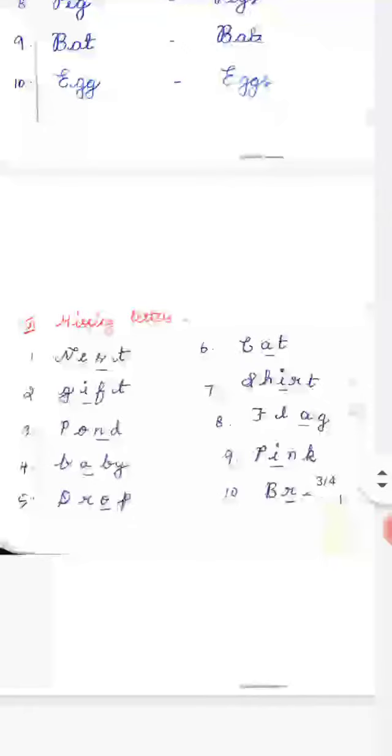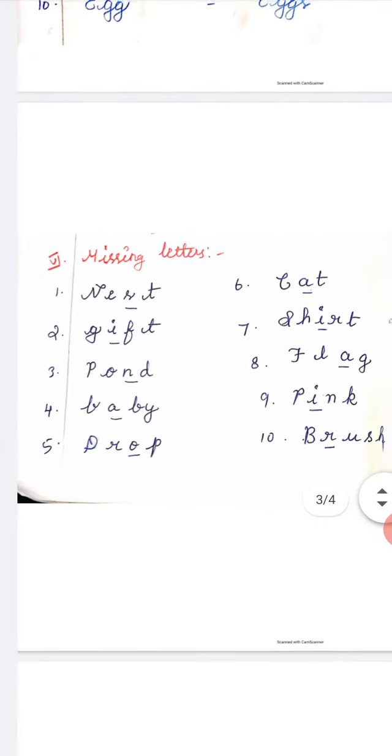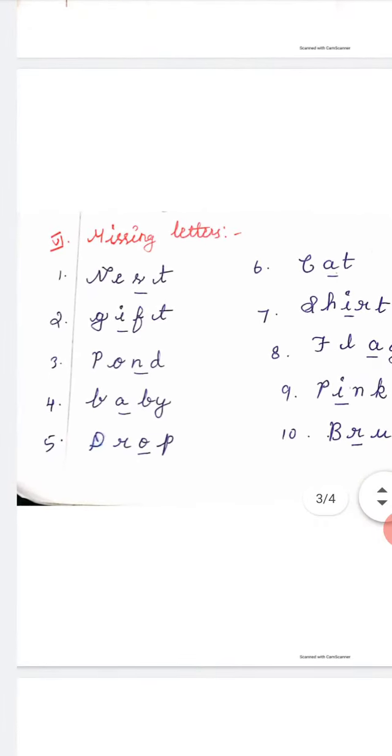The next one, missing letters. Here there are gives some words. In this words, they give some space between the letters. You have to fill the dash and form a word. First one, to form a meaningful okay.